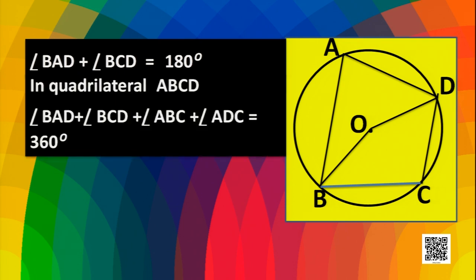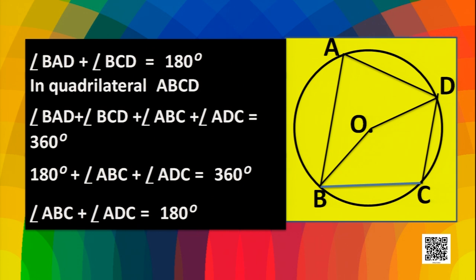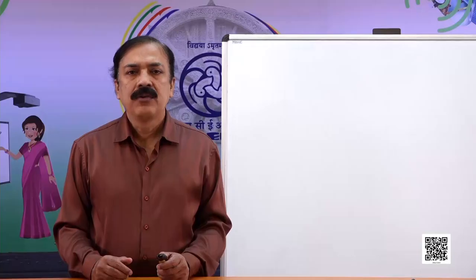We know that in quadrilateral ABCD, the sum of all four angles is 360 degrees. So angle BAD + angle BCD + angle ABC + angle ADC = 360°. Substituting angle BAD + angle BCD = 180°, we get 180° + angle ABC + angle ADC = 360°. Taking 180° to the right side, angle ABC + angle ADC = 180°. These are also opposite angles of the quadrilateral. So we proved the theorem.